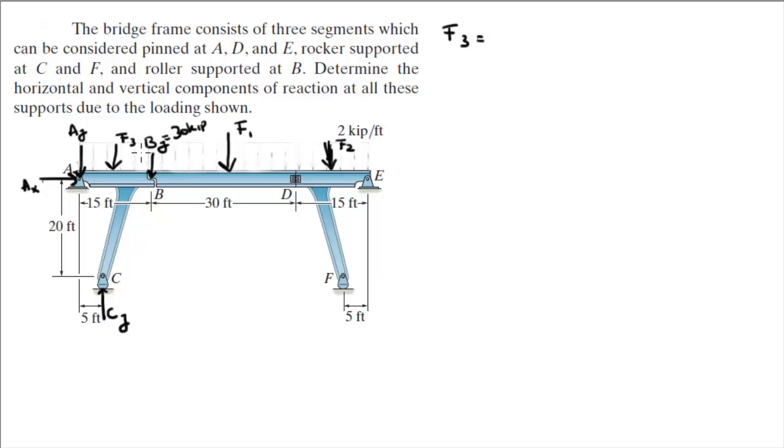Sum of the forces on the Y is equal to 0. Minus AY, minus F3, minus BY, plus CY. You got F3, you got BY, you got CY. All you're missing is AY. Solve for AY and you get that AY is equal to 75 kip.